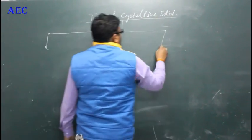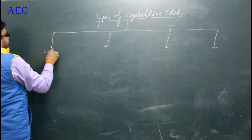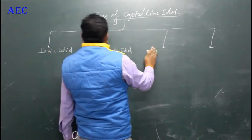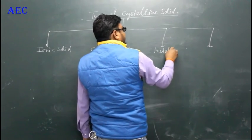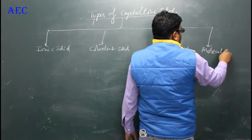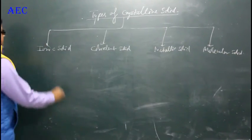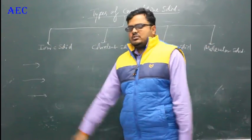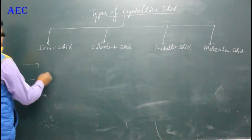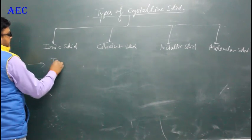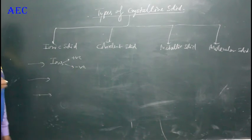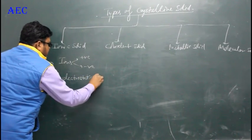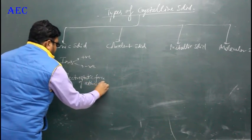Crystalline solids are basically of four types: ionic solid, covalent solid, metallic solid, and molecular solid. For each type, three points are important: constituent particles, the force between them, and examples. In ionic solids, the constituents are positive and negative ions, and the force of attraction between them is the electrostatic force of attraction.